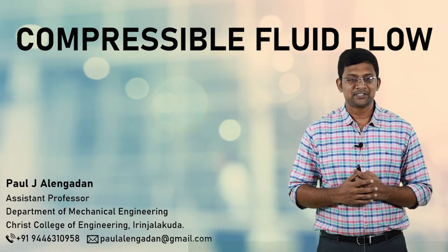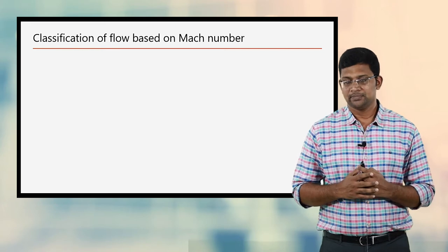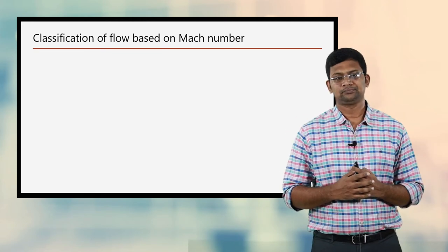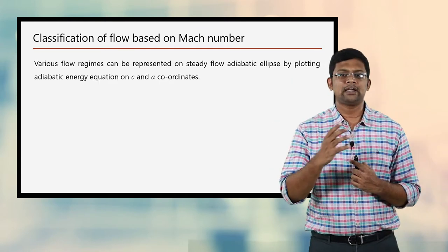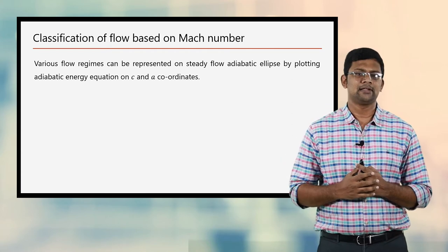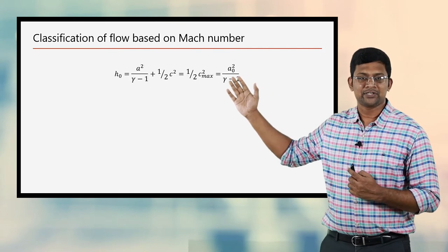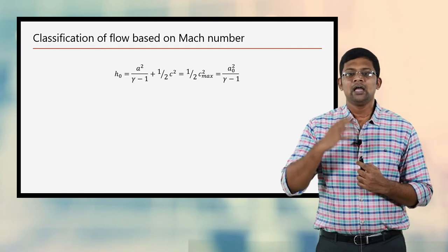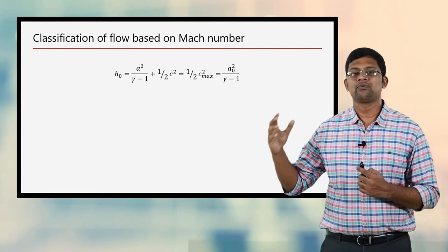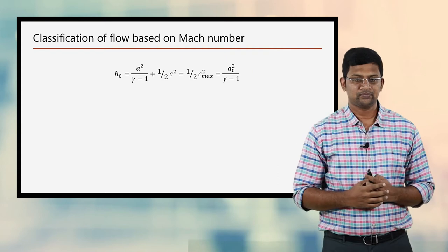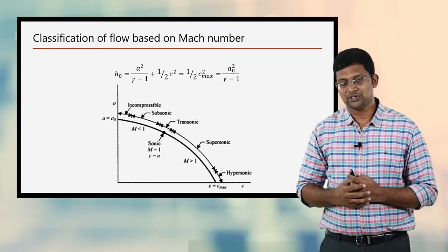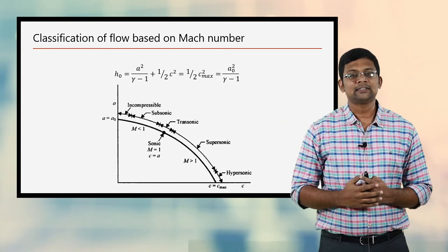Let us start today's discussion by speaking about the classification of flow based on Mach number. You might have heard the terms supersonic, hypersonic, etc. Now let us see how this classification is done. The flow regimes can be represented on a steady flow adiabatic ellipse just by plotting the adiabatic energy equation on C and A coordinates. This equation is the adiabatic energy equation, derived towards the last part of the last video. Here we can see the variables C, the velocity of the object, and A, the velocity of sound. We are plotting the curve for different values of C and A satisfying the above equation, and the output is this adiabatic ellipse.